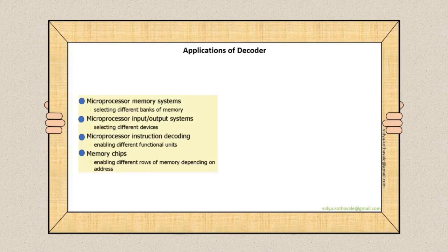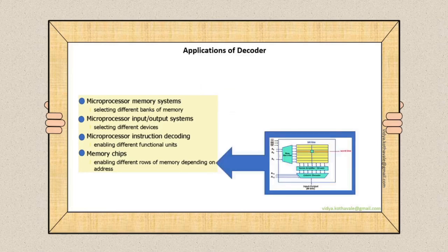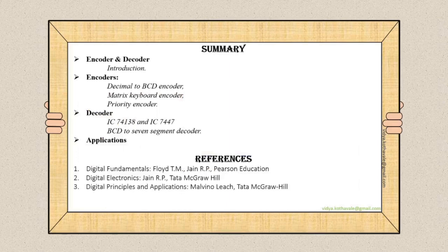Applications of decoder: in microprocessor memory systems for selecting different banks of memory, in selecting different devices, in enabling different functional units, and in memory chips for enabling different rows of memory depending on address. Let's conclude: we studied encoders and decoders, their types and applications.